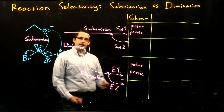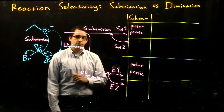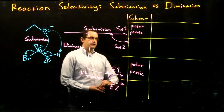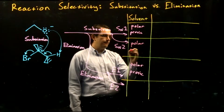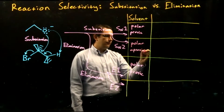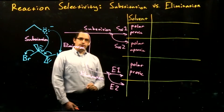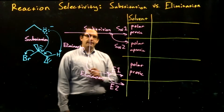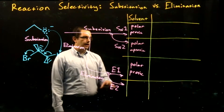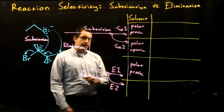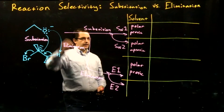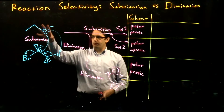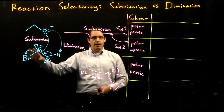Polar protic solvents have the same role of stabilizing the carbocation and allowing that reaction to occur more quickly. For SN2, we didn't like that protic solvent — we preferred a polar aprotic solvent. An aprotic solvent doesn't have a hydrogen that can be used for hydrogen bonding attached to an electronegative oxygen or nitrogen. The reason SN2 prefers an aprotic solvent is because that solvent doesn't have as strong interactions with the nucleophile, so it won't block our nucleophile from attacking our alkyl halide or alcohol.